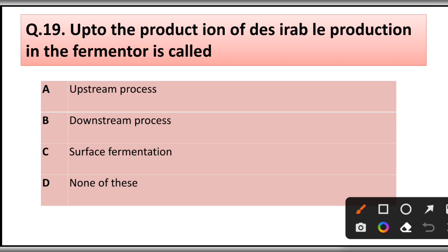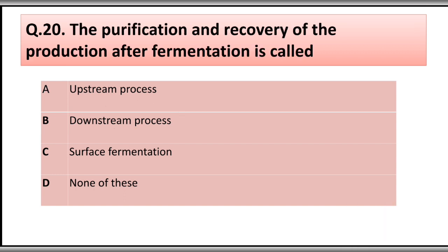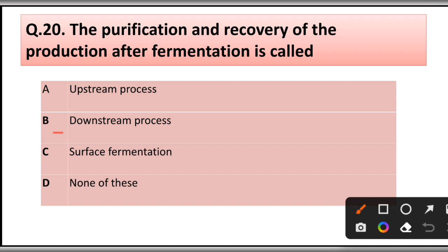Question number eighteen: The production of a desirable product in a fermenter is called: A) upstream process, B) downstream process, C) surface fermentation, D) none of these. The correct answer is option B, downstream process. Similarly, the purification and recovery of the product after fermentation is also called the downstream process.